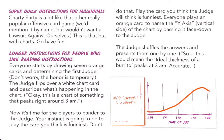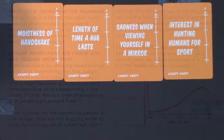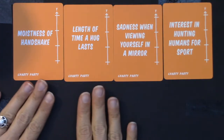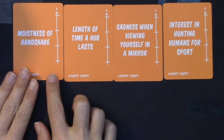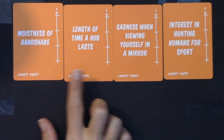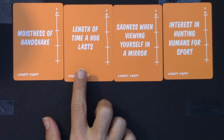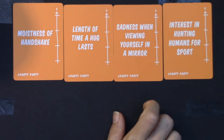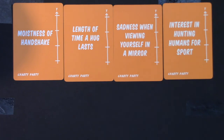So let's see what our four card options are. I just drew these off my orange pile, so it looks like we have potential y-axes: the moistness of a handshake, the length of time a hug lasts, the sadness when viewing yourself in a mirror, and interest in hunting humans for sport.